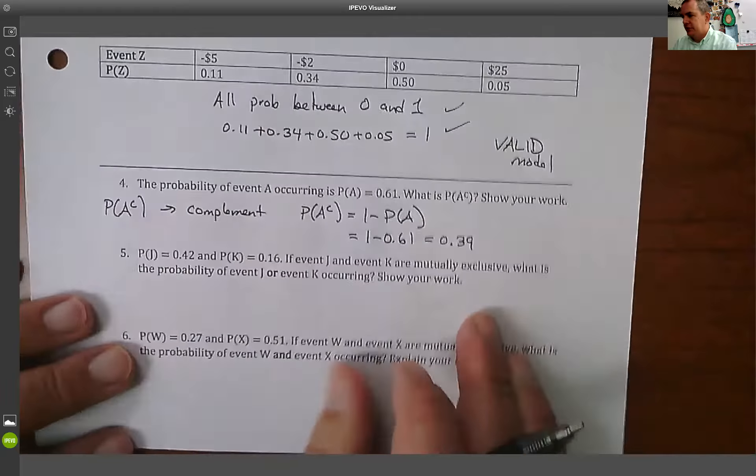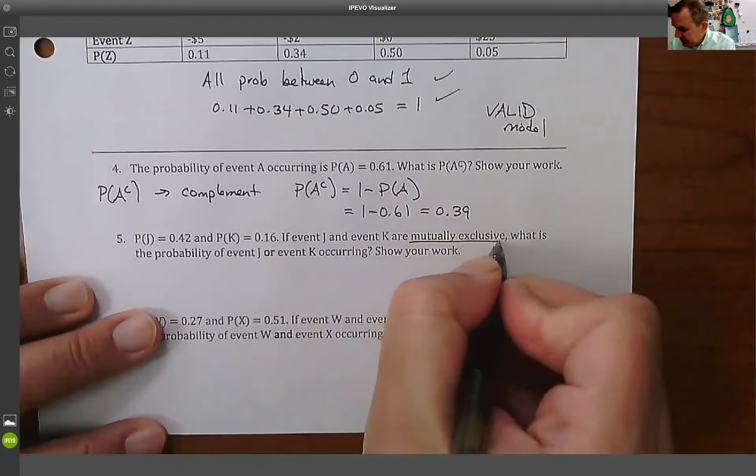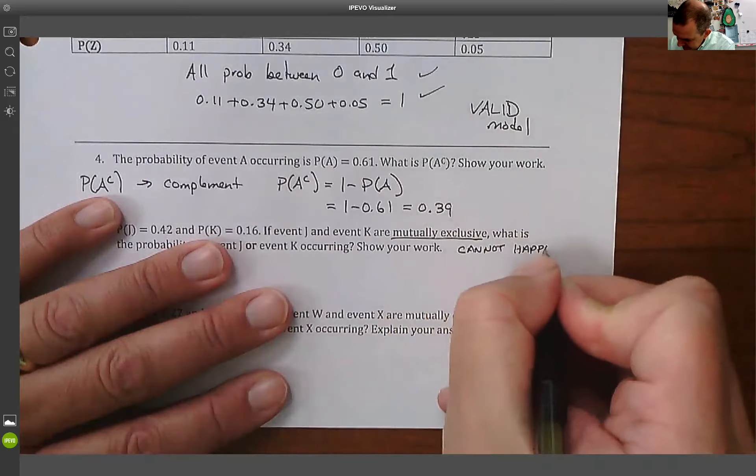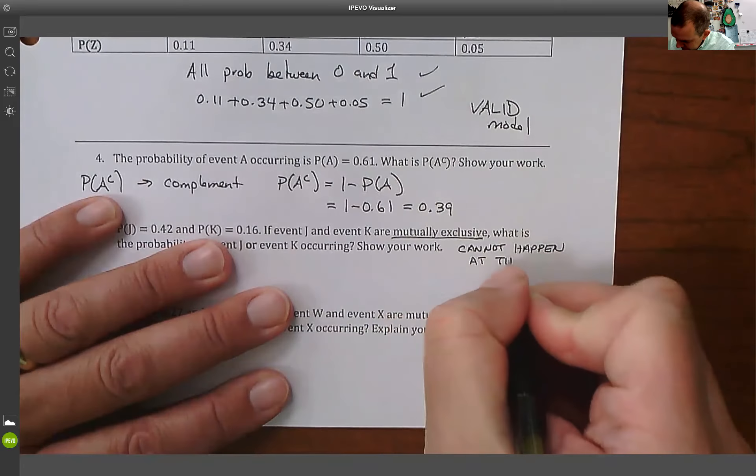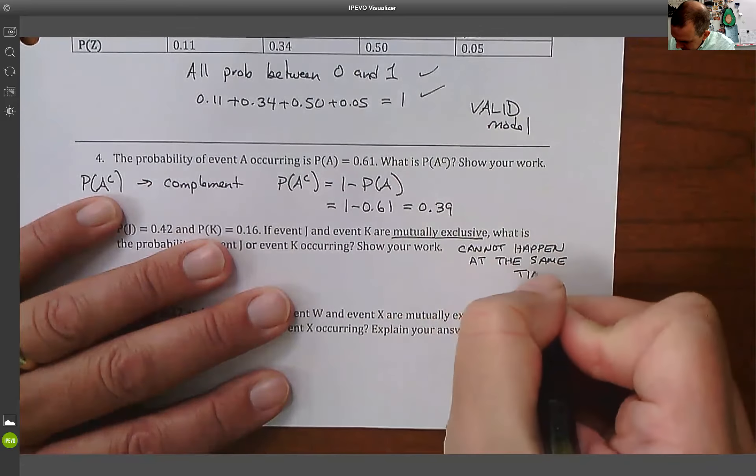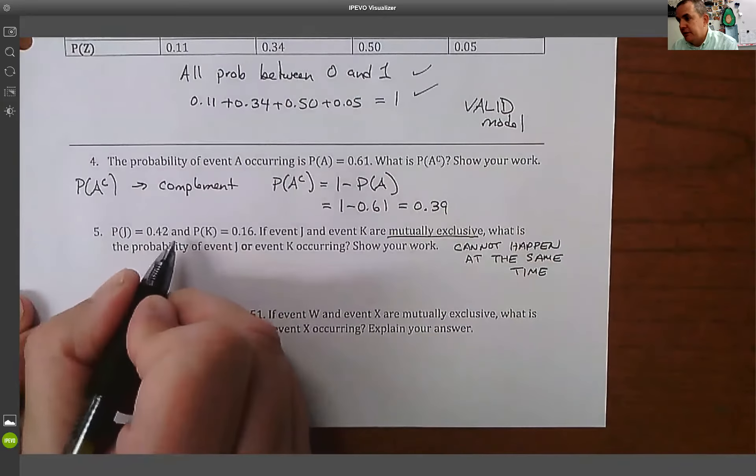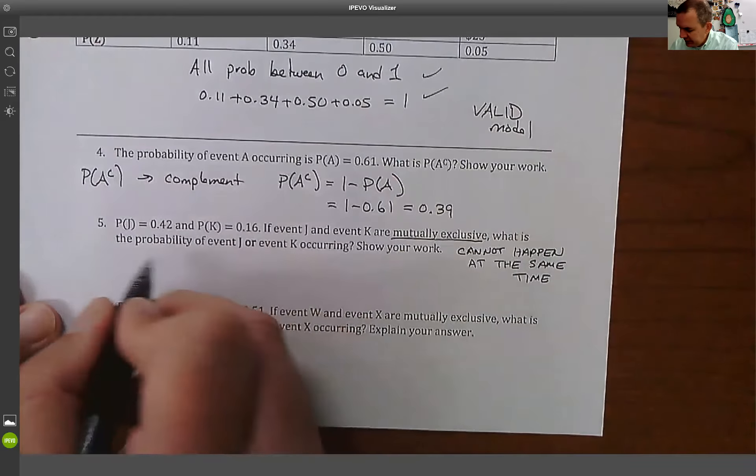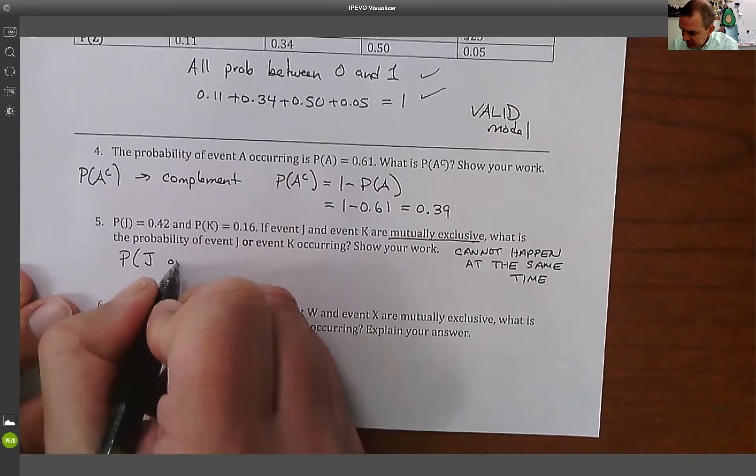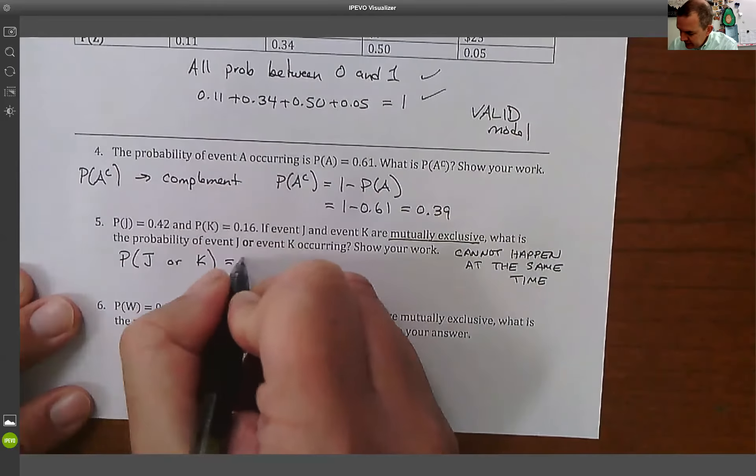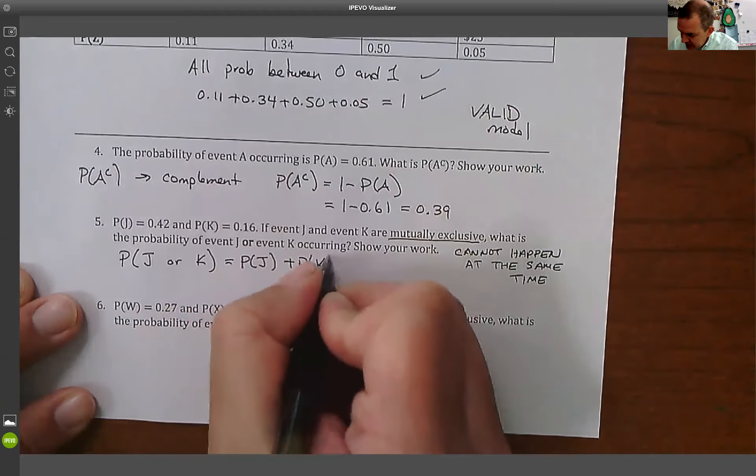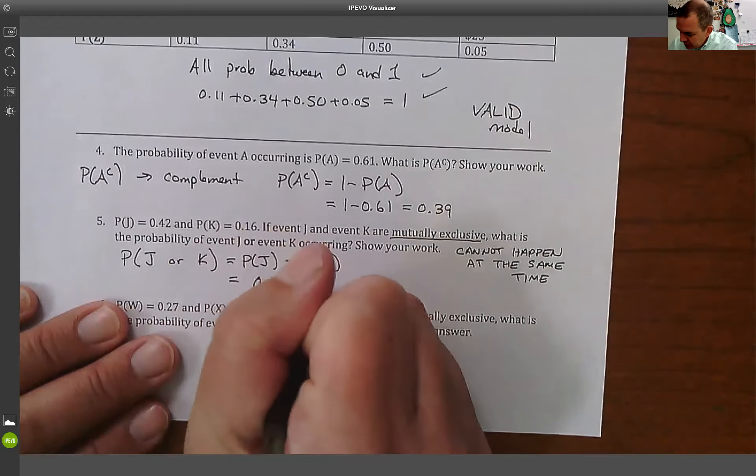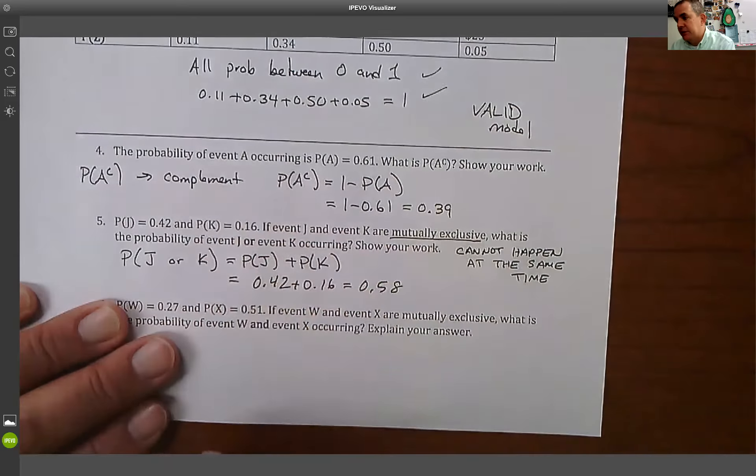And then the last two are our ideas of what mutually exclusive means. Mutually exclusive means cannot happen at the same time. So in this case, the probability of J is 0.42, the probability of K is 0.16. What's the probability of J or K happening? Since they're mutually exclusive, this is the rule: we're allowed to add them together because they can't happen at the same time. So 0.42 plus 0.16, the probability is 58%.